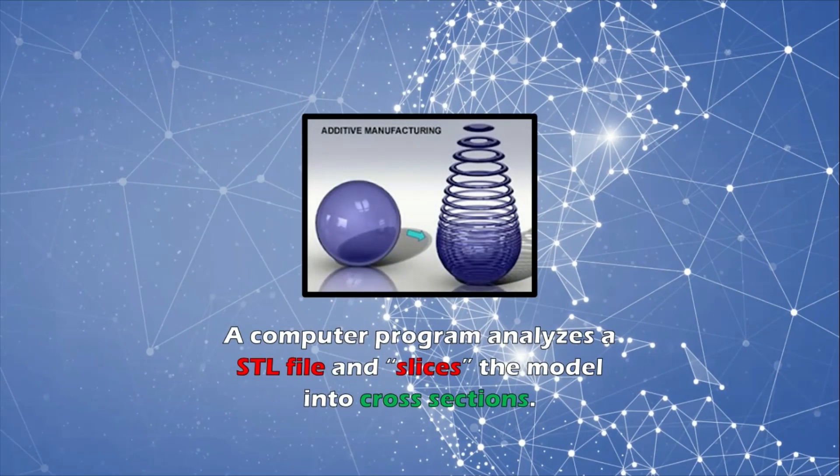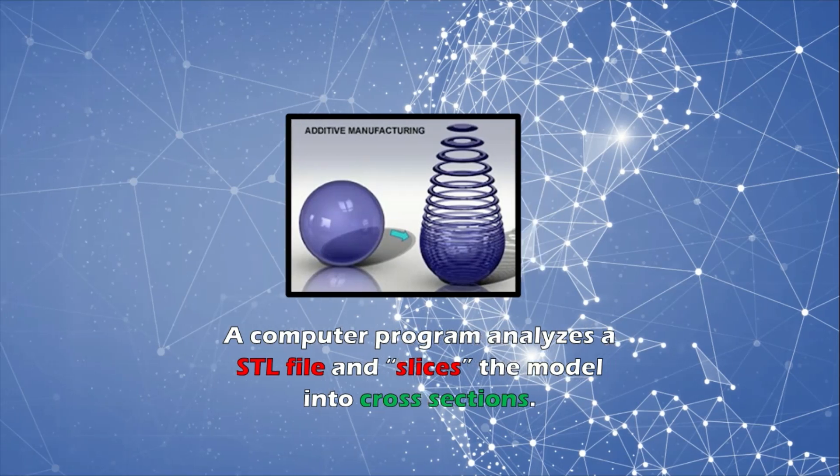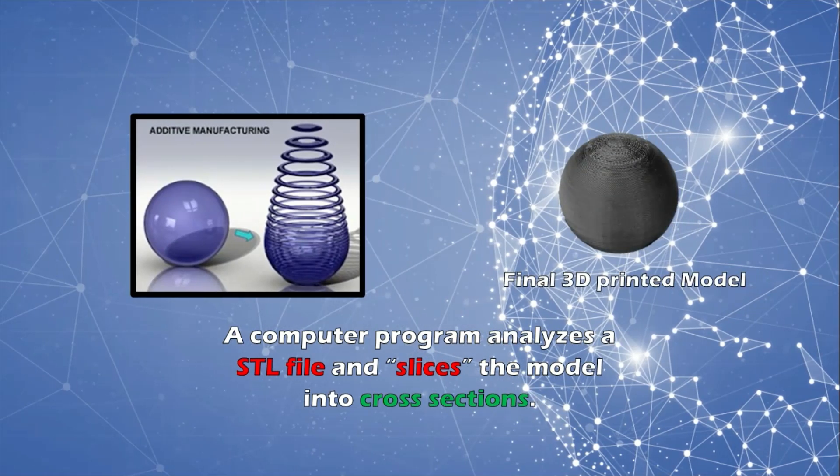A computer program analyzes an STL file and slices the model into cross sections. The cross sections are systematically recreated in the 3D printer in the form of a 3D physical model. Other similar methods may also be employed to build the model.